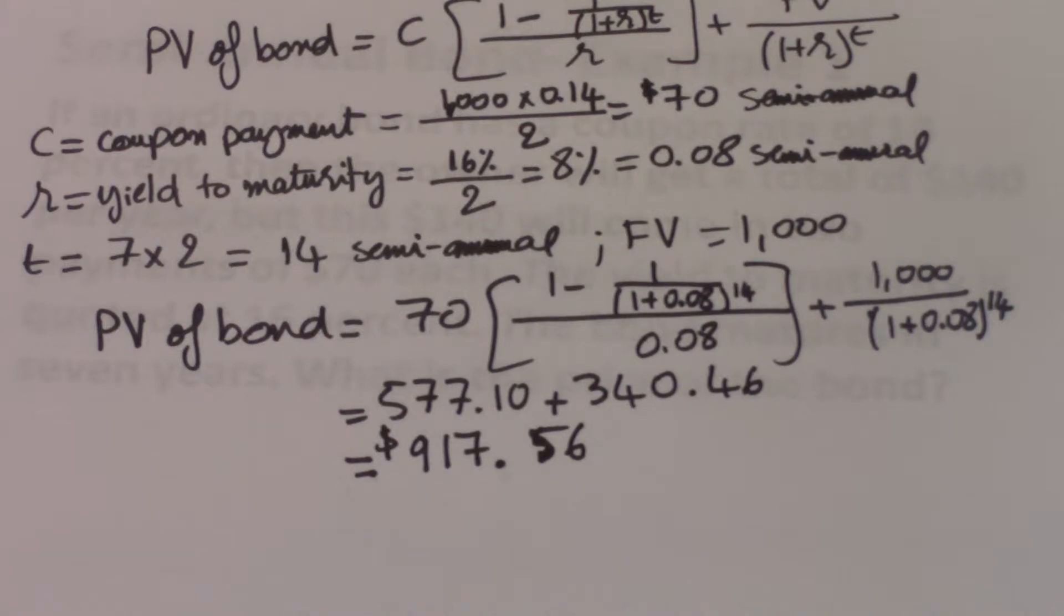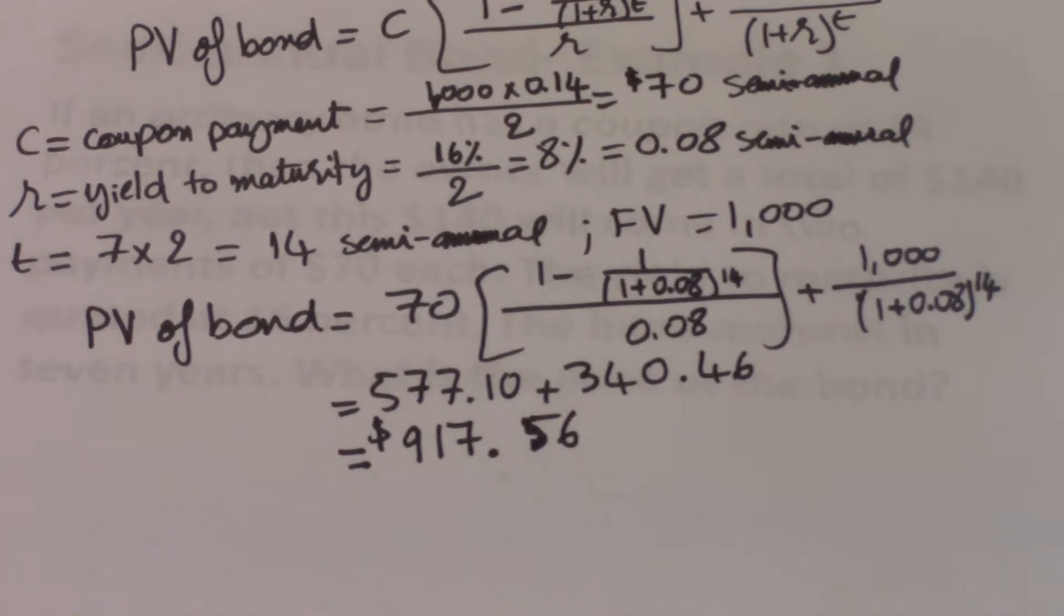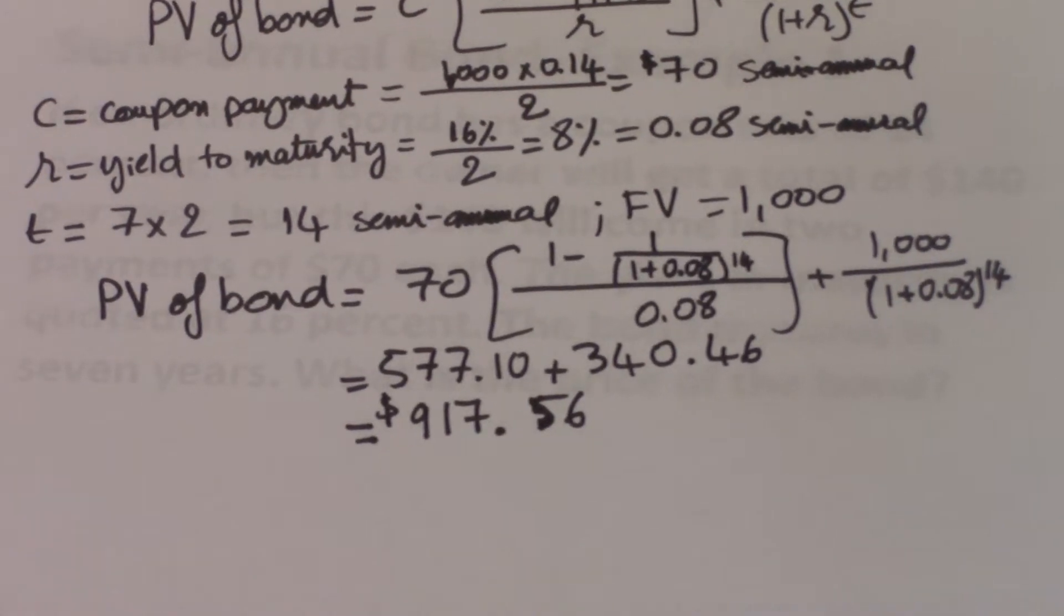Again, you see that this is less than the par value, which means that it is selling at a discount. You can get this number using the financial calculator. And there are two ways you can use the calculator.